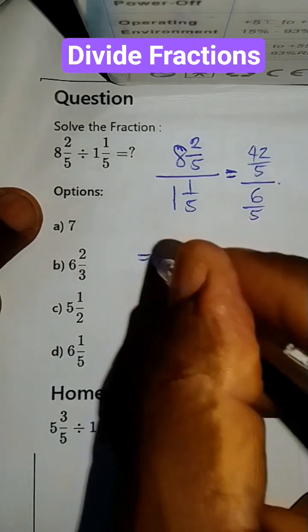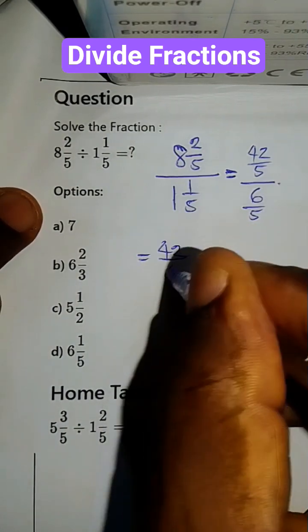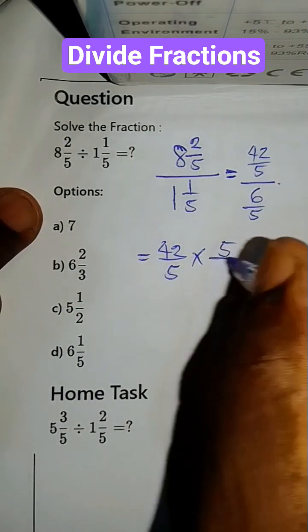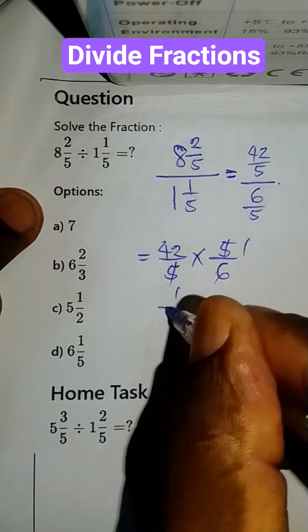So we rearrange. It becomes 42 all over 5 times 5 all over 6. 5 in 1, 5 in 1.